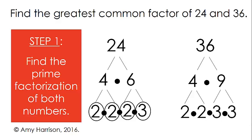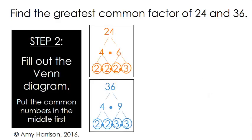So our prime factorization of 36 is 2 times 2 times 3 times 3, or 2 squared times 3 squared. For our next step,